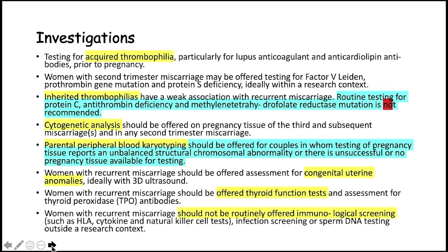Parental peripheral blood karyotyping should only be offered for couples where pregnancy tissue testing reports an unbalanced structural chromosomal abnormality, or when no pregnancy tissue is available. 3D ultrasound should be used in cases of congenital uterine anomalies. Women with recurrent miscarriages should be offered thyroid function tests and assessment for thyroid peroxidase (TPO) antibodies. HLA typing, cytokine testing, and natural killer cell testing should not be routinely offered, nor should sperm DNA testing outside a research context.